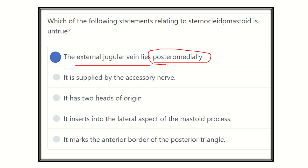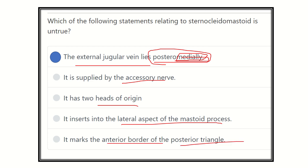So our answer is ready. The external jugular vein lies posteromedially — this is NOT true, because the external jugular vein lies laterally to the sternocleidomastoid. The other options are all true: it is supplied by the accessory nerve; it has two heads of origin — sternal and clavicular; it inserts into the lateral aspect of the mastoid process; and it marks the anterior border of the posterior triangle. The only false option is that the external jugular vein lies posteromedially.